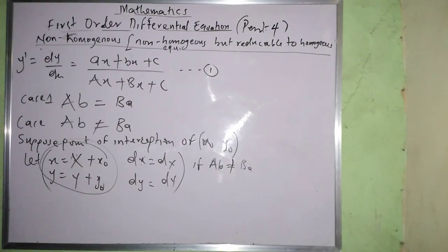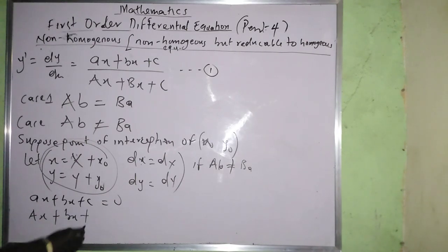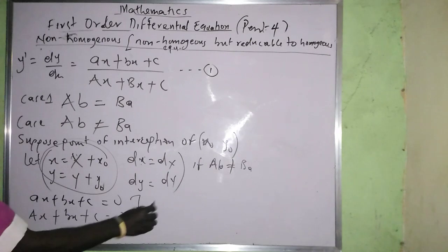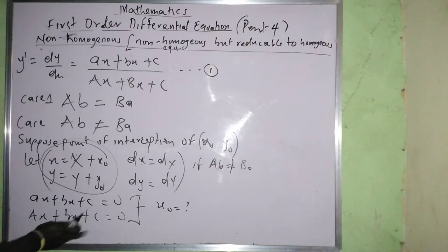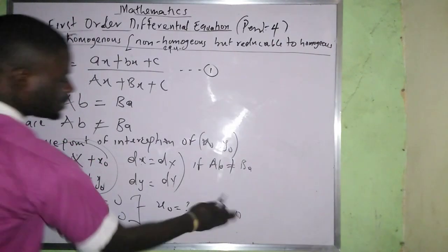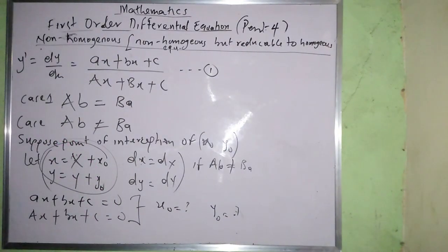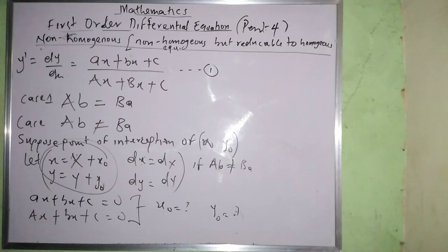To find (x₀, y₀) you must solve the simultaneous equations: ax + by + c = 0 and Ax + By + C = 0. Solving these gives you x₀ and y₀, which you then substitute back. That is what you need to present for case one.